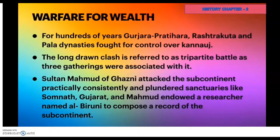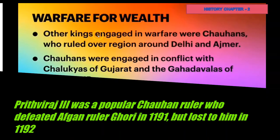One of the best known of such rulers is Sultan Mahmud of Ghazni of Afghanistan. He ruled from 997 to 1030 and extended control over parts of Central Asia, Iran, and the northwestern part of the subcontinent. He raided the subcontinent almost every year. His targets were wealthy temples, including that of Somnath, Gujarat. Much of the wealth he carried away was used to create a splendid capital city at Ghazni. The other kings engaged in warfare were the Chauhans, who ruled the region around Delhi and Ajmer, and were engaged in conflict with the Chalukyas of Gujarat and the Gahadawalas of western UP.